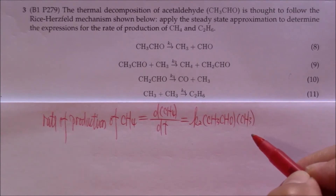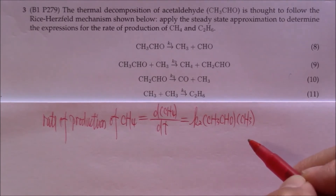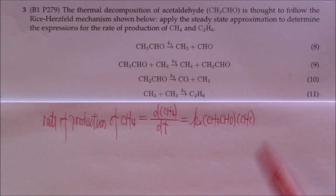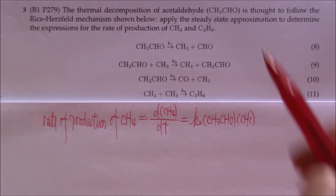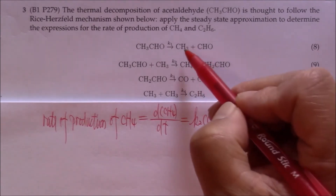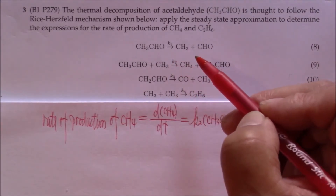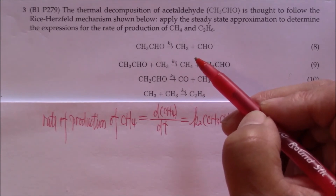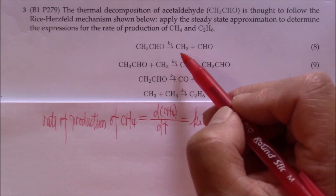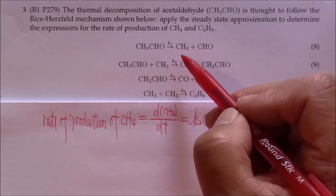The general method to eliminate the intermediate is to use steady state approximation. Now let's apply steady state approximation to CH3. When we look at the four elementary reactions, all of them contain CH3. Steady state approximation means that the rate of production of an intermediate must be equal to the rate of consumption of the same intermediate.